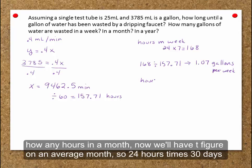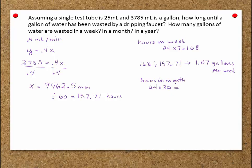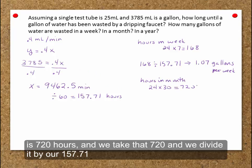We can figure out how many hours in a month. Now we'll have to figure on an average month. So we'll say an average month 24 hours times 30 days is 720 hours. We take that 720 and we divide it by our 157.71.